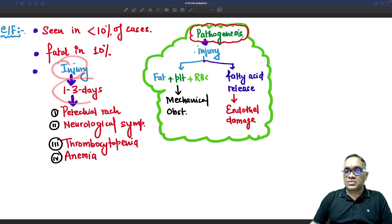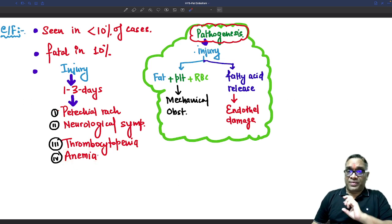After the injury, after one to three days, you will find petechial rash, neurological symptoms, thrombocytopenia and anemia because the fat cells are damaging bone marrow RBCs and peripheral blood RBCs and platelets.